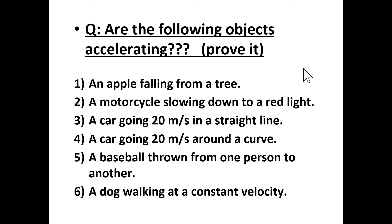A dog walking at a constant velocity — those last two words are magic words. Constant velocity, by its very definition, means there is zero acceleration. There is no acceleration. The speed of the dog is not changing, nor is its direction.